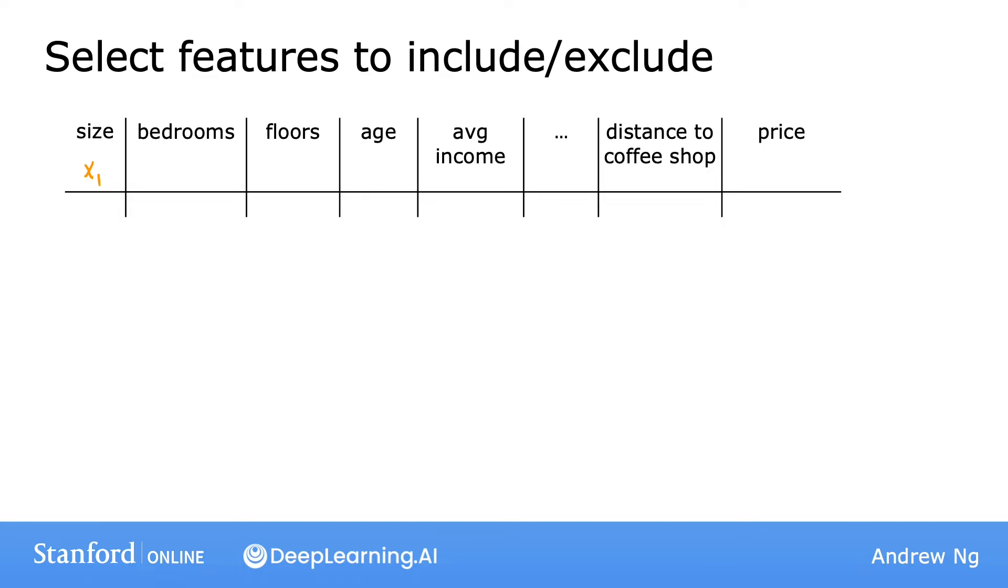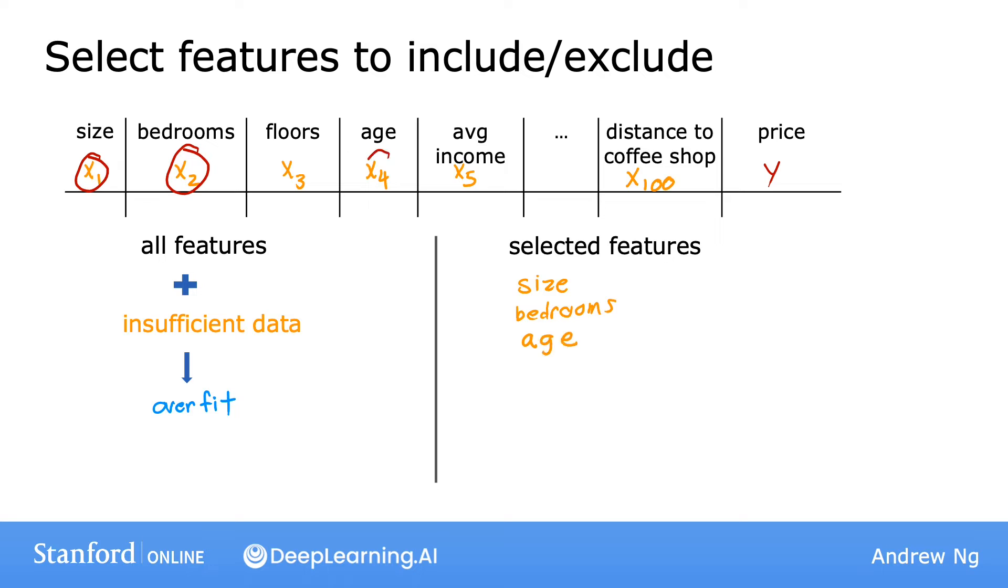Maybe you have a lot of different features of a house with which to try to predict its price, ranging from the size, number of bedrooms, number of floors, the age, average income of the neighborhood, and so on and so forth, to the distance to the nearest coffee shop. It turns out that if you have a lot of features like these, but don't have enough training data, then your learning algorithm may also overfit to your training set. Now, instead of using all 100 features, if we were to pick just a subset of the most useful ones, maybe size, bedrooms, and the age of the house, if you think those are the most relevant features, then using just that smaller subset of features, you may find that your model no longer overfits as badly.